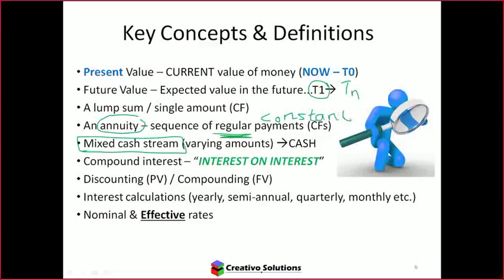What if it's an annuity where the amount increases by 10% every year? That's a growing annuity — still regular, but increasing by a fixed percentage. You don't cover growing annuities in this module; DSC 1630 covers it. Remember: a lump sum is one amount; an annuity is several amounts that must be the same; a mixed stream of cash flow is like an annuity but with different amounts.